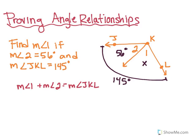Before I use the numbers, I'm going to actually write it out with my angles. So the measure of angle 1 plus the measure of angle 2 equals the measure of angle JKL. What I'm going to do next is substitute all of those measurements with what I know. So x plus 56 degrees is equal to 145 degrees.